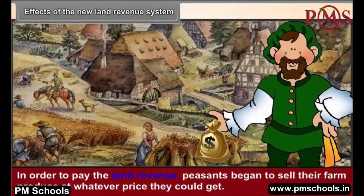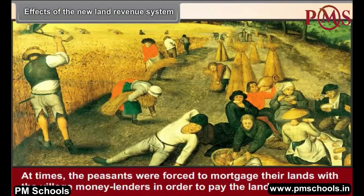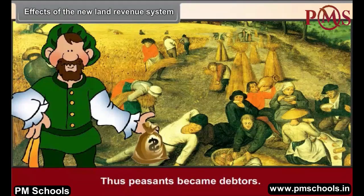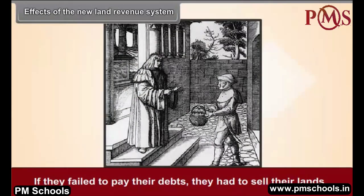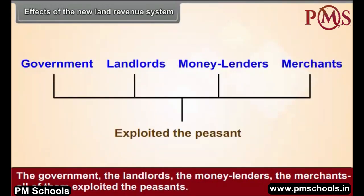The new land revenue system adversely affected rural life in India. Peasants began to sell their farm produce at whatever price they could get. Traders and middlemen bought agricultural produce at unreasonably low prices. Peasants were forced to mortgage their lands with village moneylenders to pay the land revenue, becoming debtors. If they failed to pay their debts, they had to sell their lands. The government, landlords, moneylenders, and merchants all exploited the peasants.